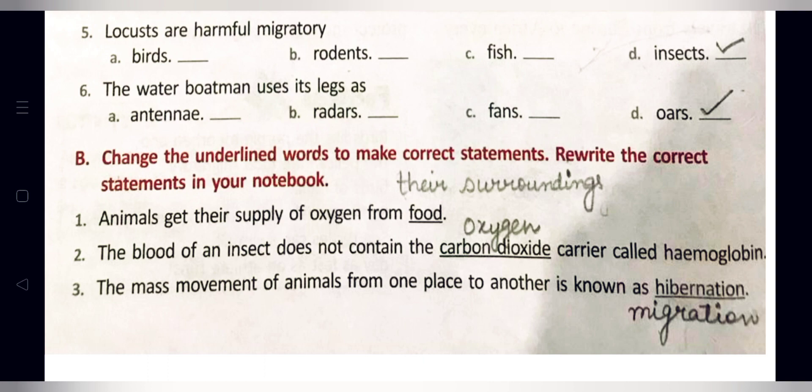Part B: Change the underlined words to make correct statements and rewrite the correct statements in your notebook. In the first sentence, the underlined word is incorrect and must be replaced. Statement one: Animals get their supply of oxygen from food — the word 'food' is incorrect. We replace it with 'their surroundings.' Correct statement: Animals get their supply of oxygen from their surroundings.